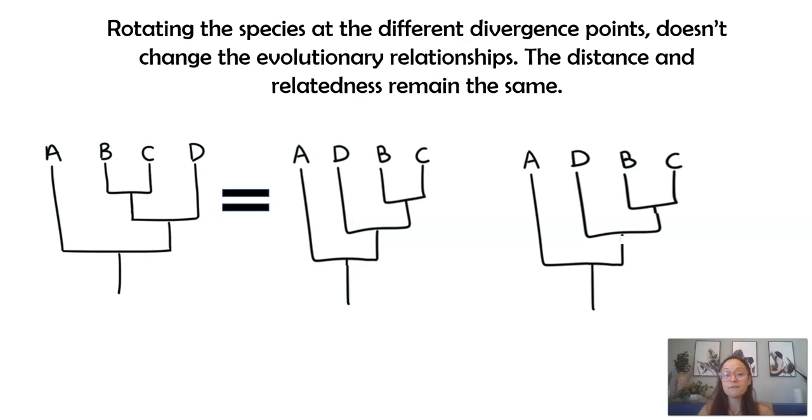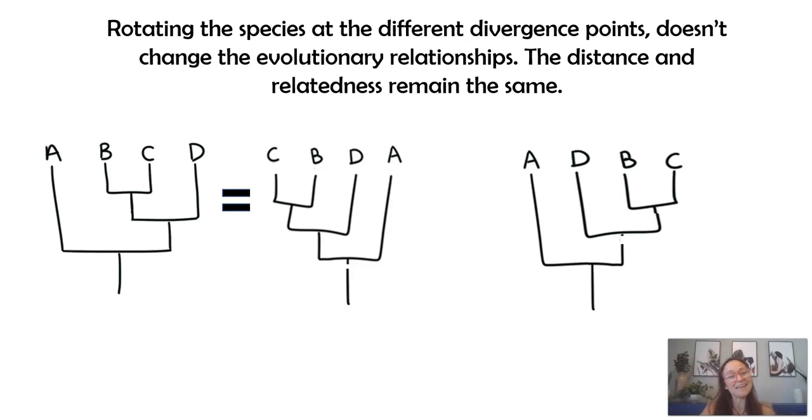You could also switch, for example, at this node, you can switch it, and it would mean the same thing as well. You can also switch just like B and C, and it would mean the same thing. So, again, it's not so much the letters or the species across the top, but rather, where are the branch points? If you look at, in my diagrams here, like this third image where it goes C, B, D, A, I'm sorry, the second one. You can see now A is way far on the right. It doesn't mean that A is more evolved than C. We're looking at still the divergent points and the speciation and the most recent common ancestors between the different groups and how we interpret the evolutionary relatedness of these organisms.